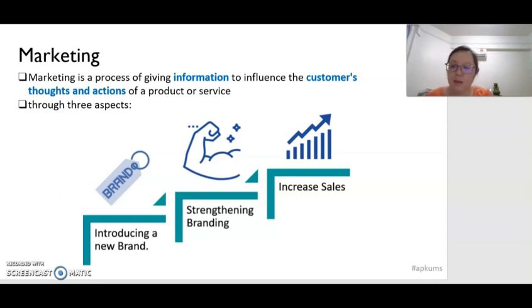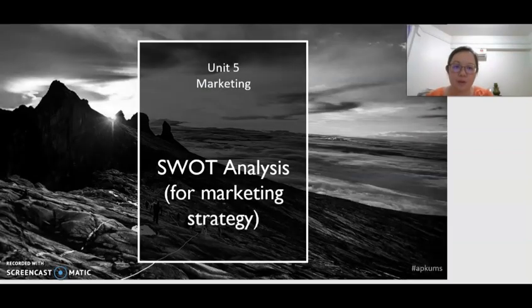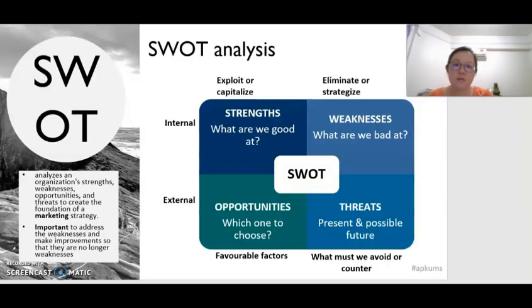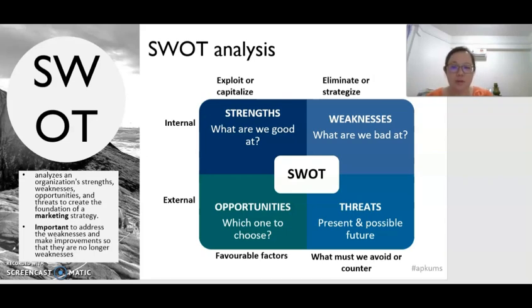So before a marketer plans for any marketing strategy, they will have to analyze the environment first. One way to analyze the environment is by doing SWOT analysis. SWOT comes from the word S for strengths, W for weaknesses, O for opportunities, and T for threats. SWOT analysis is to analyze an organization's internal factors — strengths and weaknesses — as well as external factors — opportunities and threats — to create the foundation of a marketing strategy.